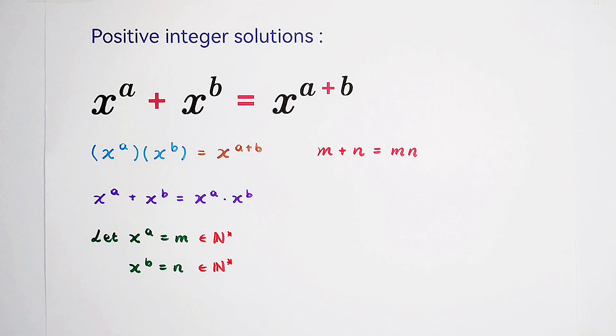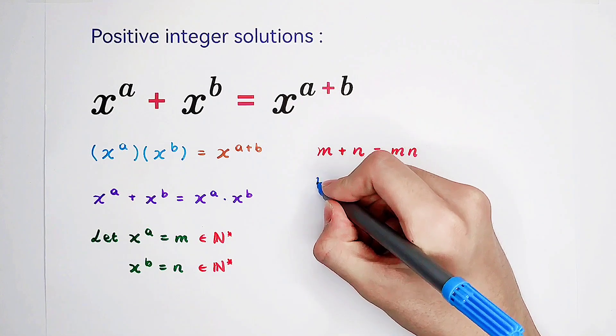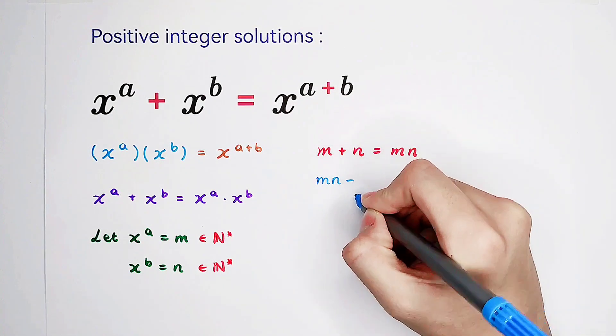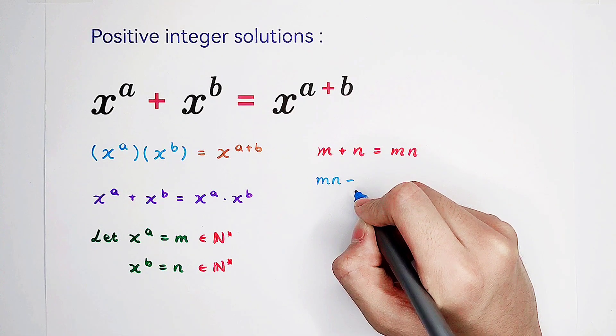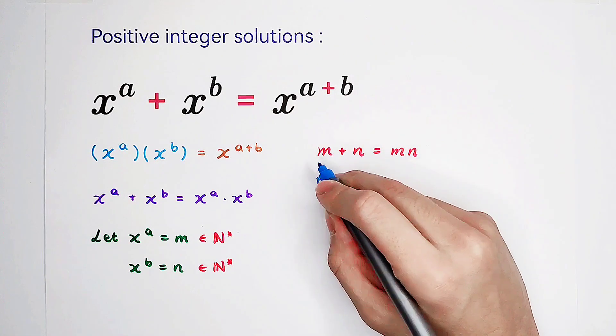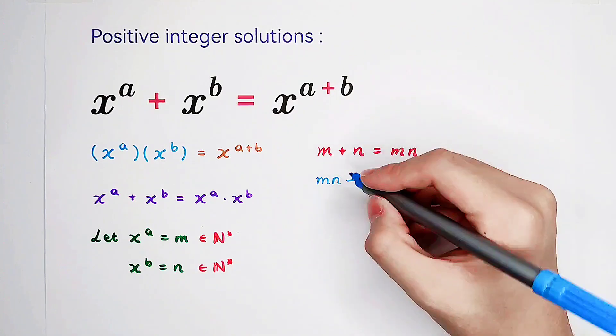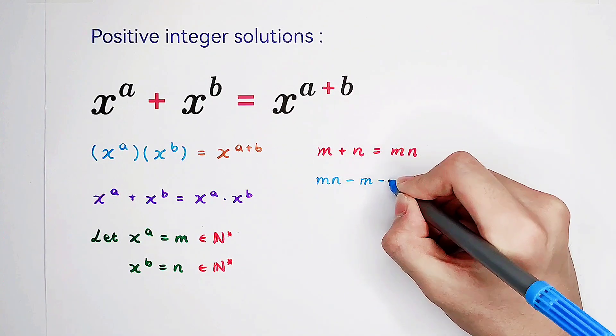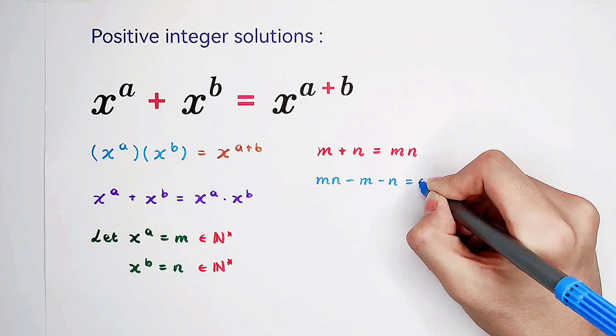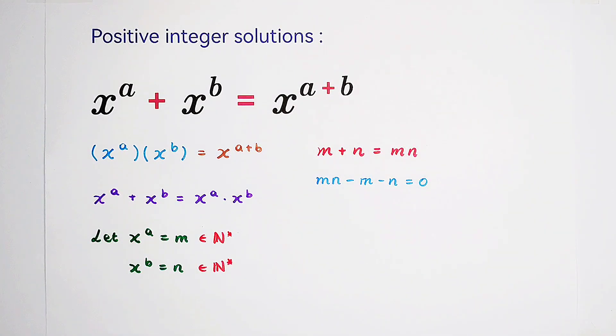Usually for this kind of equation, we have to subtract the right-hand side from the left-hand side or the left-hand side from the right-hand side. In this case, we subtract the left-hand side from the right-hand side. So m times n minus m minus n equals 0.